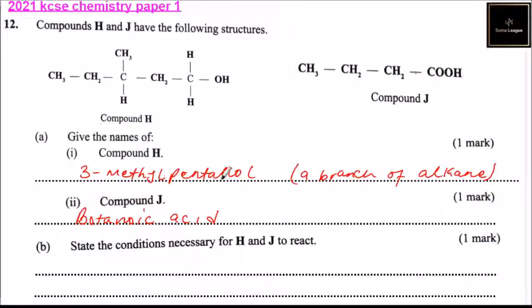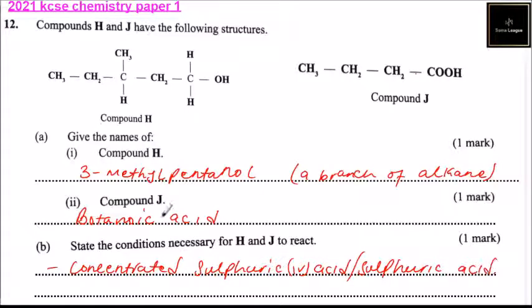So for 3-methyl penthal and botanoic acid, one condition is concentrated sulfuric acid. Or you can simply call it sulfuric acid. You'll still be able to get a mark.